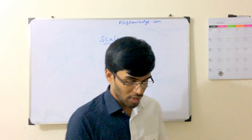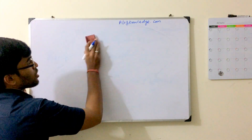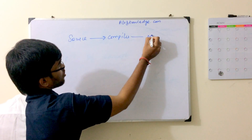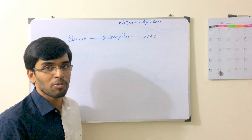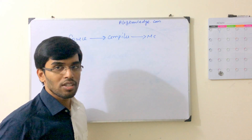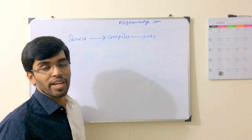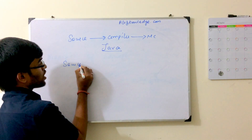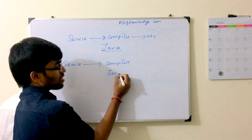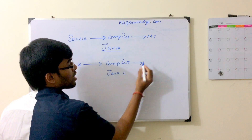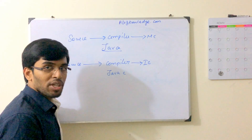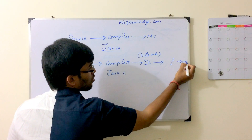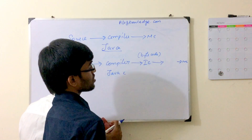To answer that, we need to understand how compilation happens in Java. In any normal programming language, source code goes to a compiler, and the compiler converts it to machine code. The source code is human-readable, and the compiler converts it so the machine can understand. In Java, this is slightly modified: the source goes to a compiler called JavaC — Java's compiler — and the output is not machine code directly, but an intermediate code, technically called bytecode.